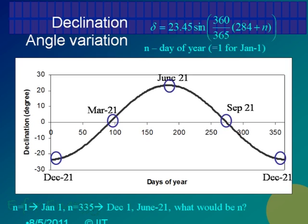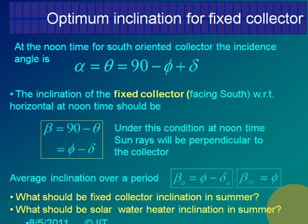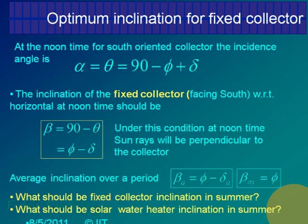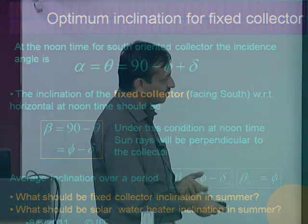Over a period of one year, the average value of delta is 0. Therefore, if you want the optimum tilt for a year, it is equal to phi. But for a given month, you should also calculate the value of delta. If you are installing solar panels at home and panels are expensive, you would do better to change the angle every month — once a month you can do this easily. Because that will increase your energy generation by some 10-15 percent easily. When putting such an expensive device, why not track it? This is the formula — find delta for that given month, subtract it, and it can be plus or minus.